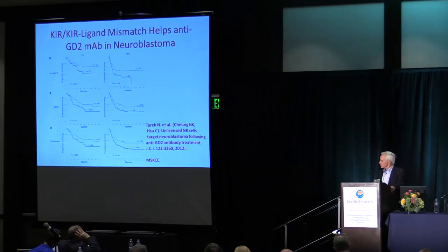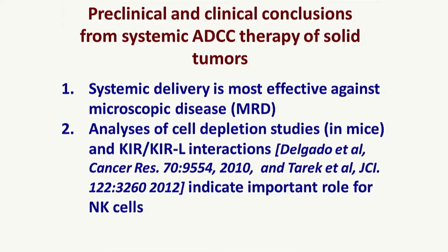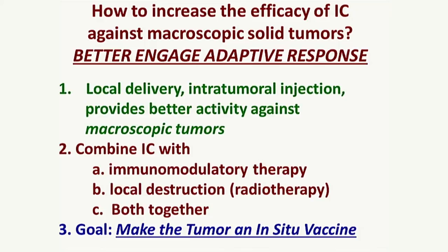Summarizing where we're at: when giving systemic delivery of a tumor-reactive antibody to mediate ADCC, treating in the setting of minimal residual disease is important, and NK cells are clearly playing a role based on both preclinical and clinical data. However, even in 2015, we have many patients who are unable to get into remission or achieve minimal residual disease. Is there anything antibody-mediated approaches can do for patients with measurable, bulky disease? That's what I'd like to focus on for the rest of this talk.